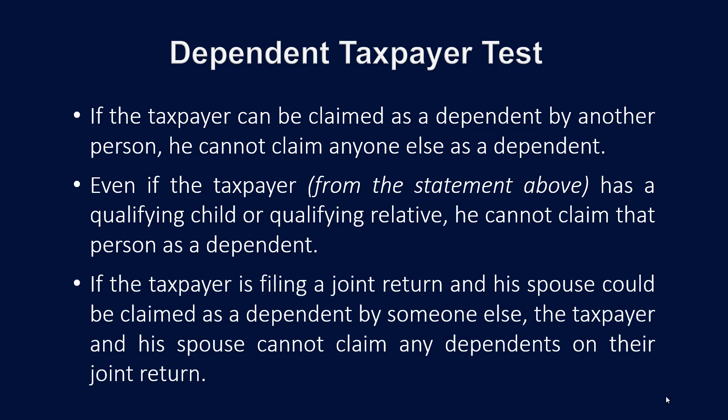If the taxpayer is filing a joint return and his or her spouse could be claimed as a dependent by someone else, the taxpayer and his or her spouse cannot claim any dependents on their joint return. In other words, what the IRS is saying here is: if you're a dependent of someone else, how can you be eligible yourself to claim a dependent?